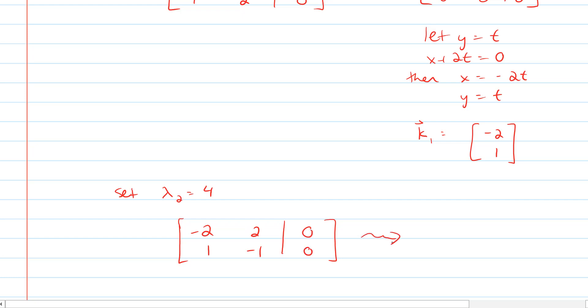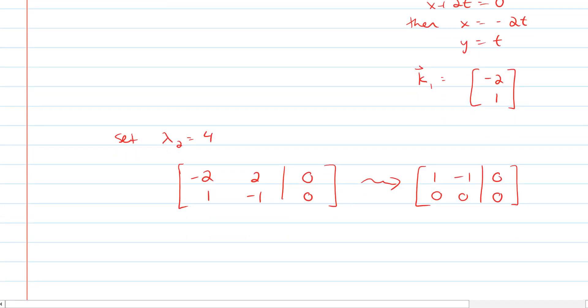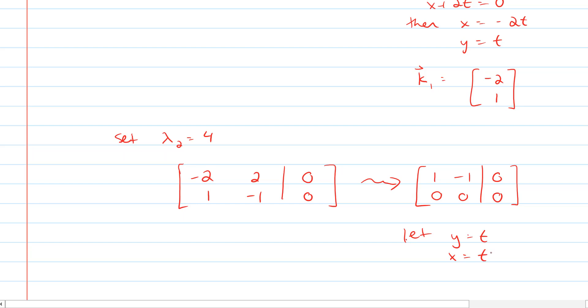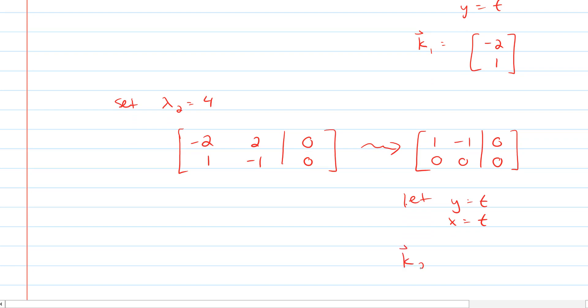Now when we row reduce this, clearly if we multiply the bottom row by 2 and add it to the top row, we're going to get 0s. If we take the top row and divide each entry by negative 2, we're going to get 1, negative 1, and 0. So again, y is a free variable here. We're going to let y equal t, and x is also equal to t because the top says that x minus y is equal to 0. And then k2 is going to be just 1, 1.